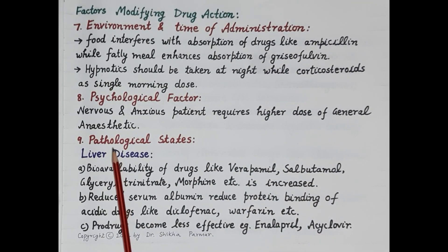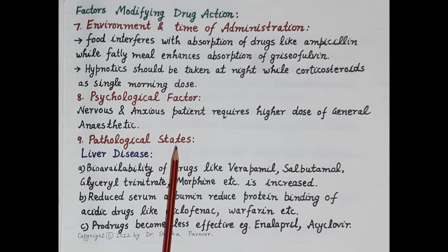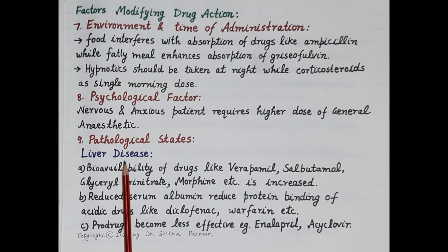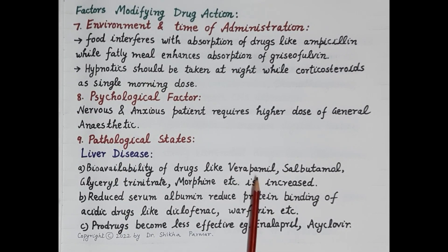The next factor is pathological state. Liver diseases like cirrhosis either inhibit or completely stop metabolism of drugs, which causes toxicity. Drugs like verapamil, salbutamol, glyceryl trinitrate, and morphine undergo high first-pass metabolism. In liver disease, these drugs are not metabolized, which increases their bioavailability and results in increased action.